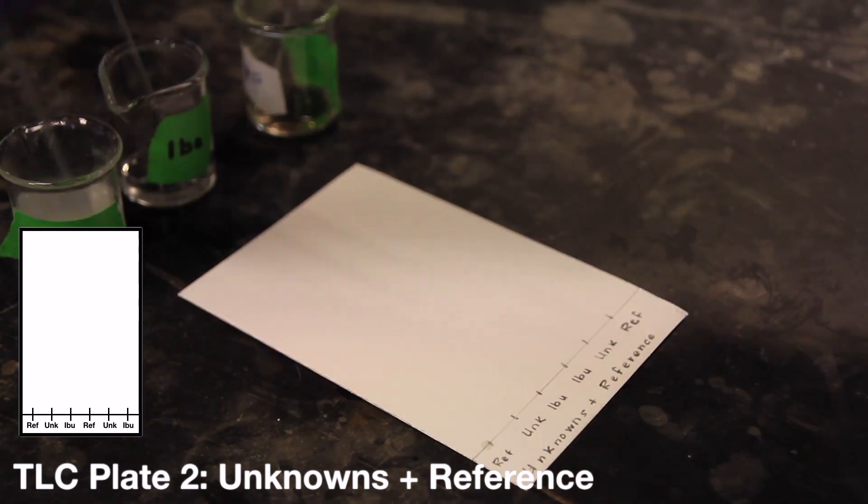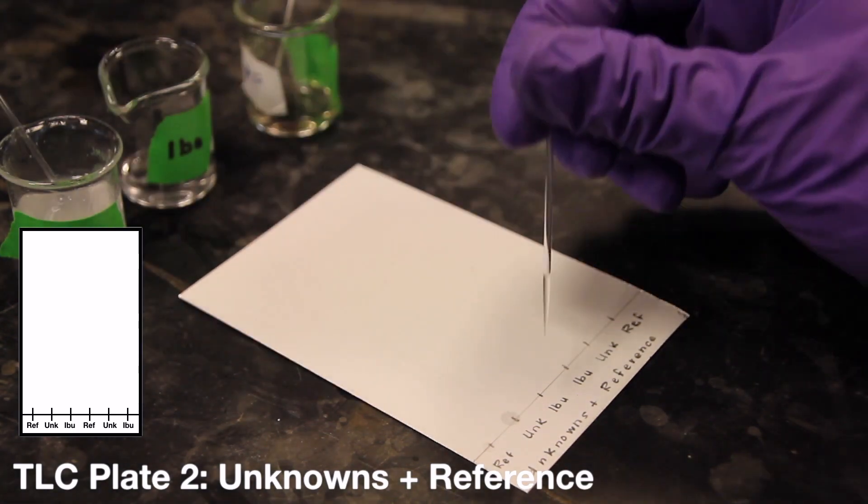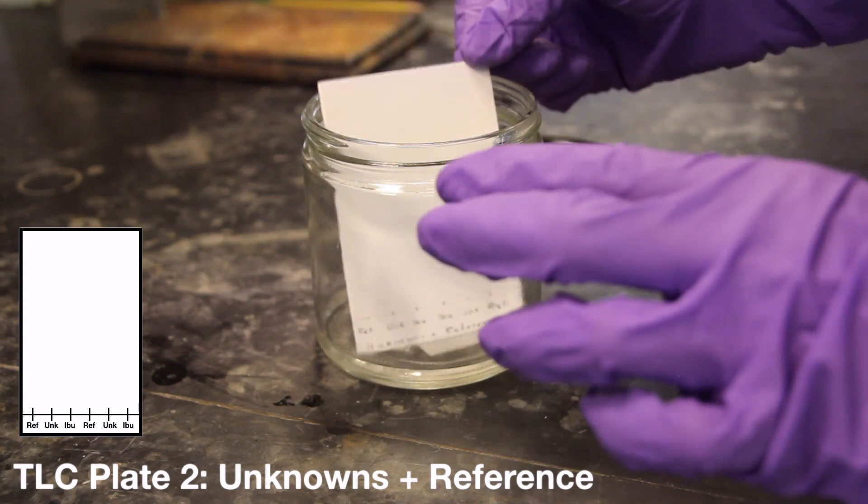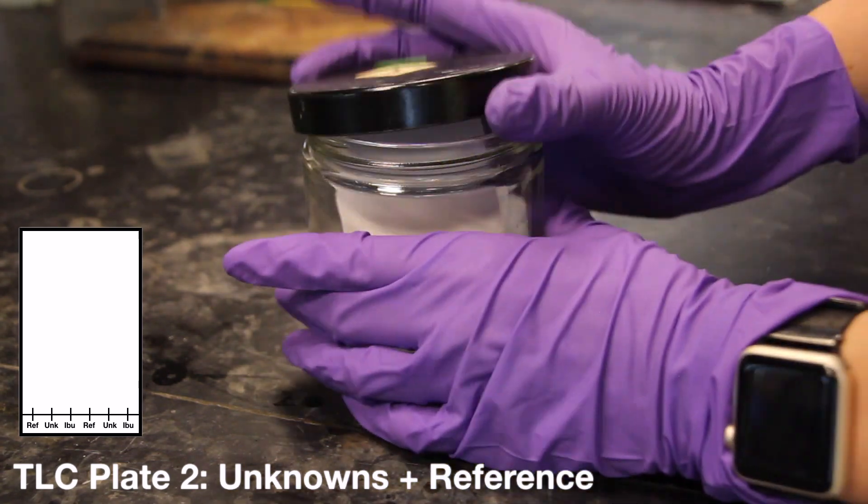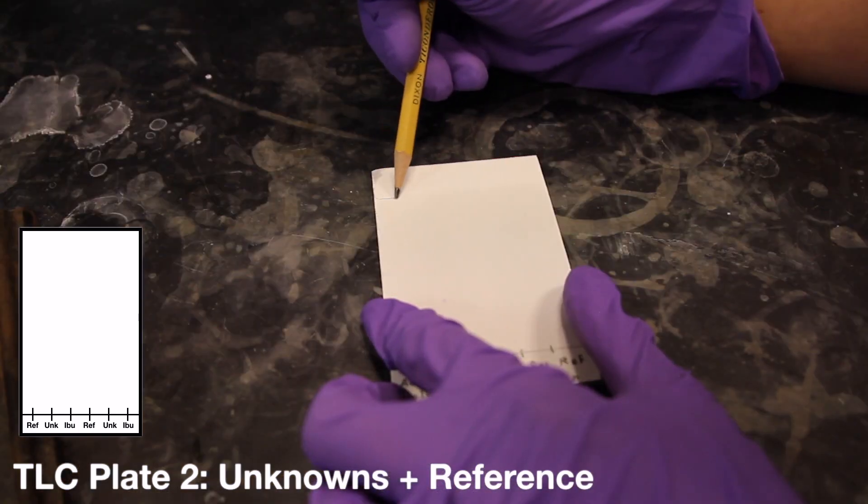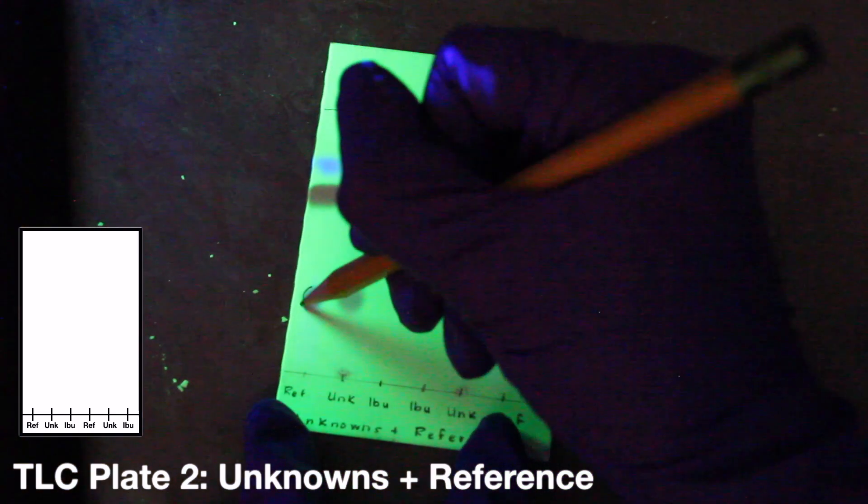The extra slots on your plate can be used to spot the unknown and reference mixtures a second time. Once your second plate has been spotted, develop it in a TLC chamber using 2-butanone as your solvent. You are going to follow the same procedure as before for visualizing the spots after chromatography and calculating the RF values of each spot.